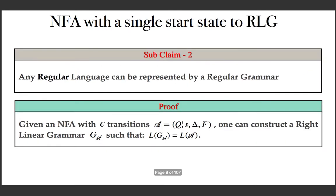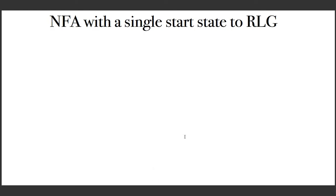With this, let me move on to the first algorithm in this lecture, which is for subclaim 2: any regular language can be represented by a regular grammar. We need to construct a regular grammar from an NFA with epsilon transitions. An NFA with epsilon transitions A can be converted into a grammar G_A such that their languages are the same. We need an algorithm to convert an NFA with a single start state to a right linear grammar.